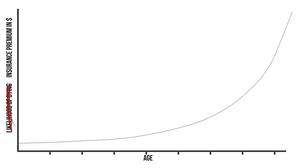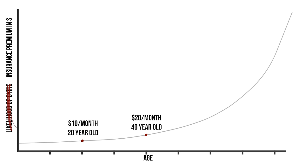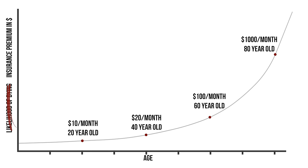For example, the same amount of coverage or death benefit that costs $10 per month for a 20-year-old might cost $20 per month for a 40-year-old, $100 per month for a 60-year-old, but might shoot up to $1,000 per month for an 80-year-old.